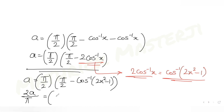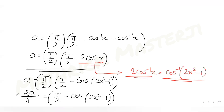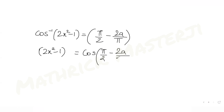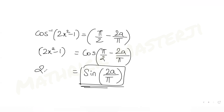Rearranging, cos⁻¹(2x² − 1) = π/2 − 2a/π. Therefore 2x² − 1 = cos(π/2 − 2a/π). We already know that cos(90° − θ) = sin θ, so this becomes sin(2a/π). That is the value of 2x² − 1.